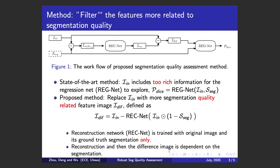The formula is as follows: the predicted dice equals the regression network with the input image and the segmentation as input. We propose to replace the input image with a more segmentation quality-related feature image, which we call the difference image. It is defined as the difference between the input image and a reconstructed image conditioned on the segmentation quality.